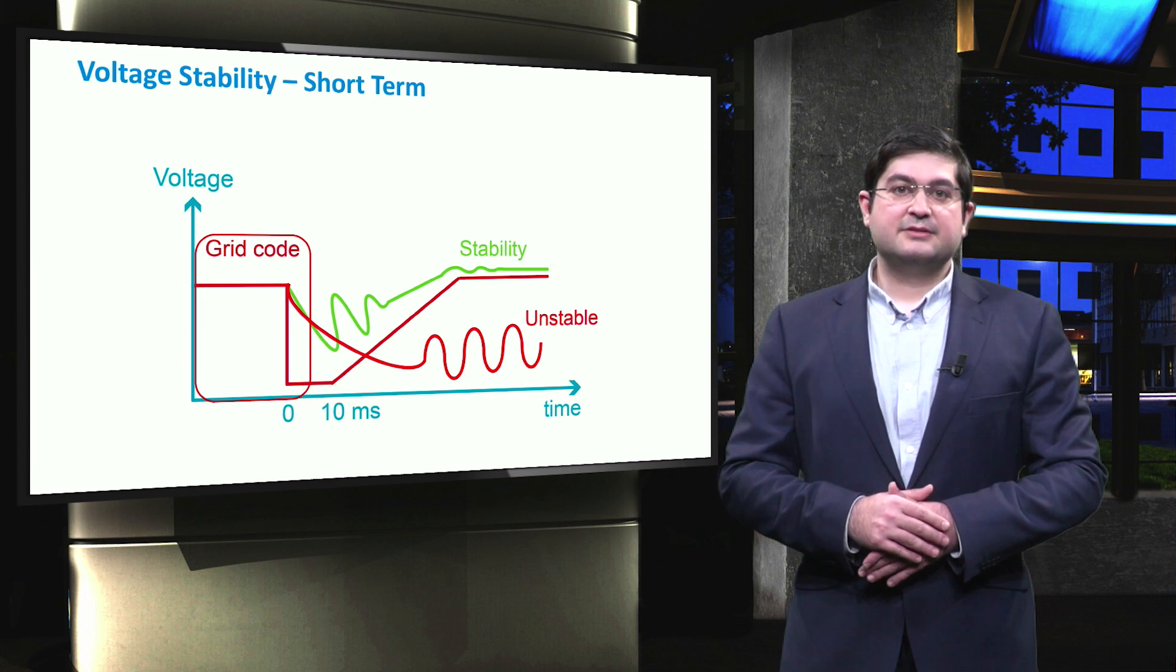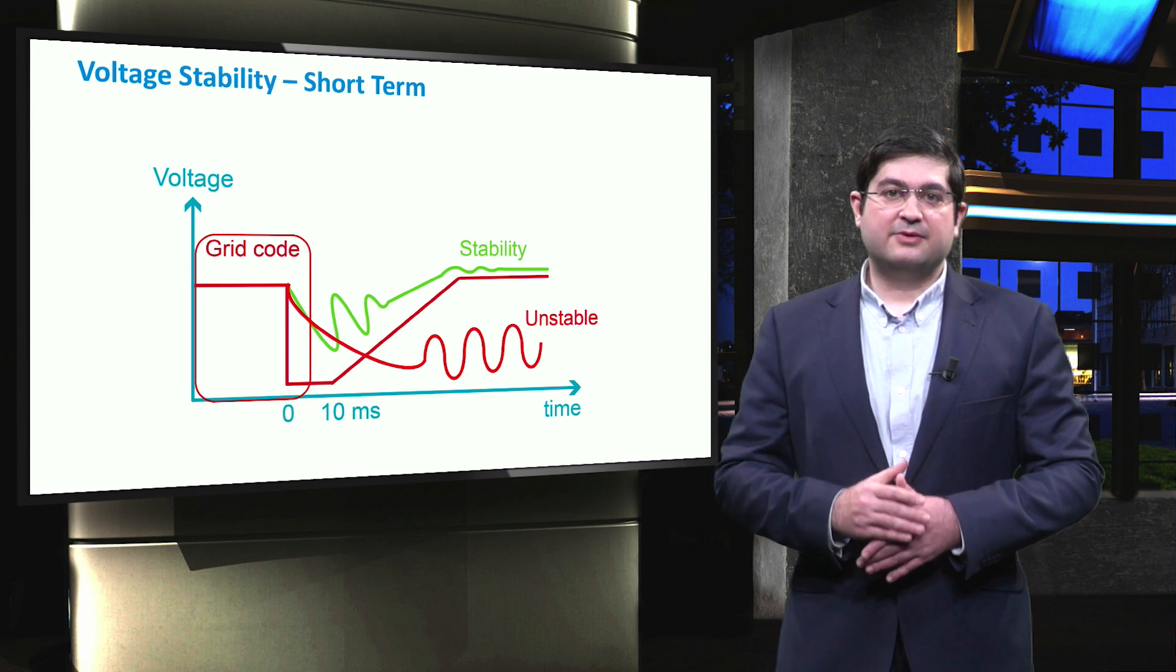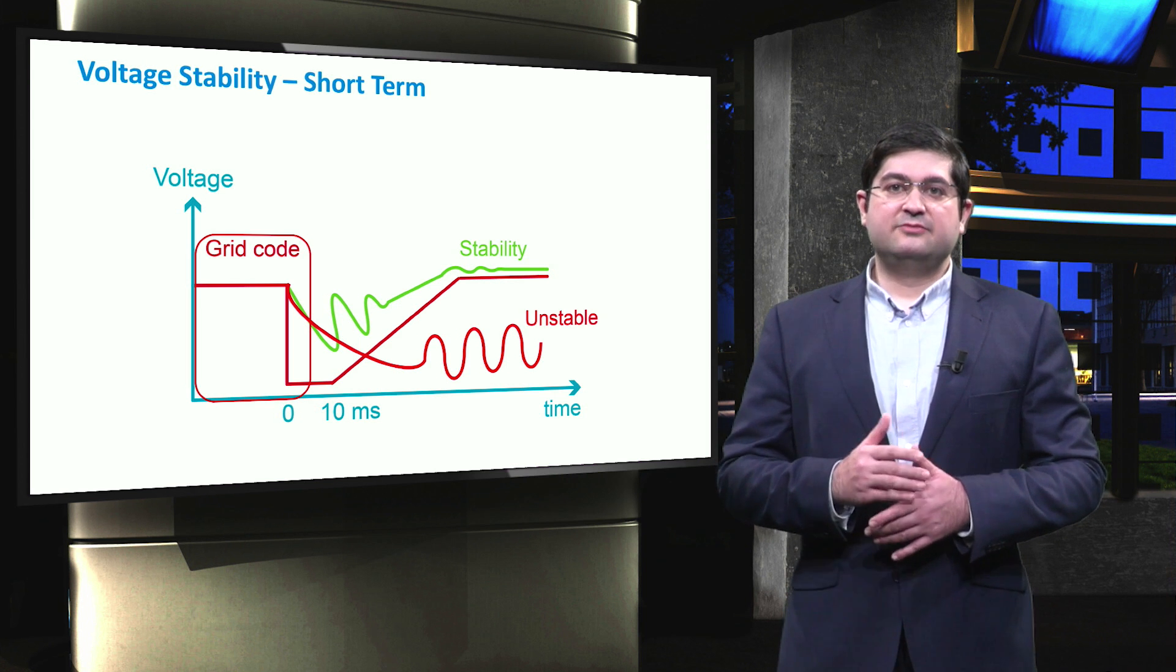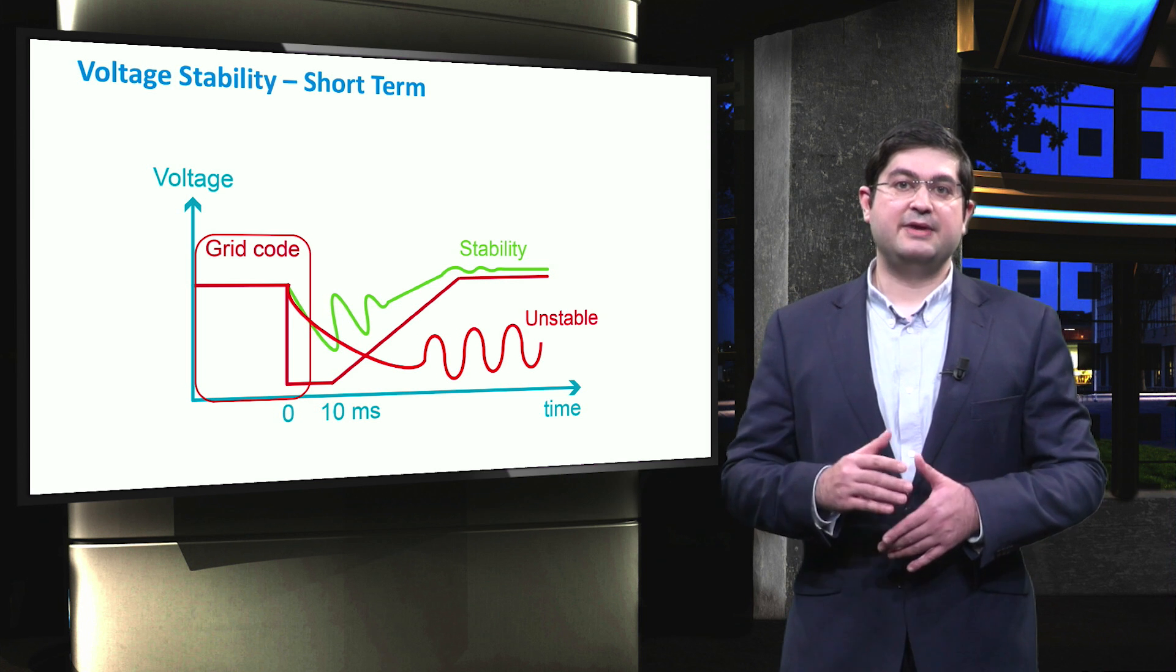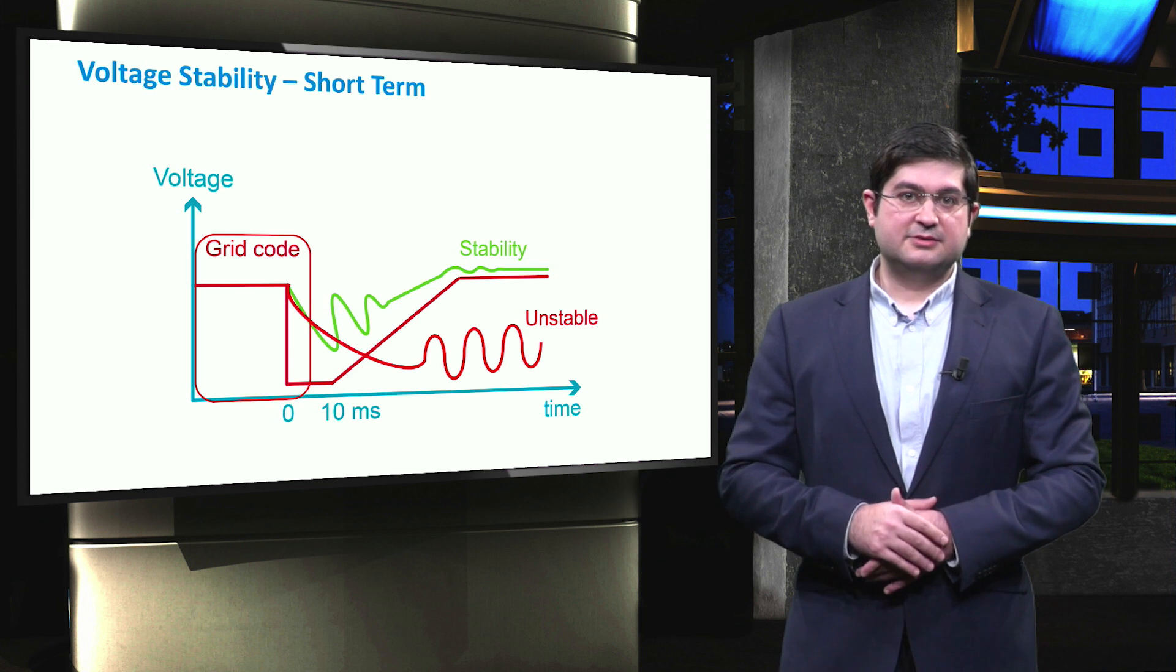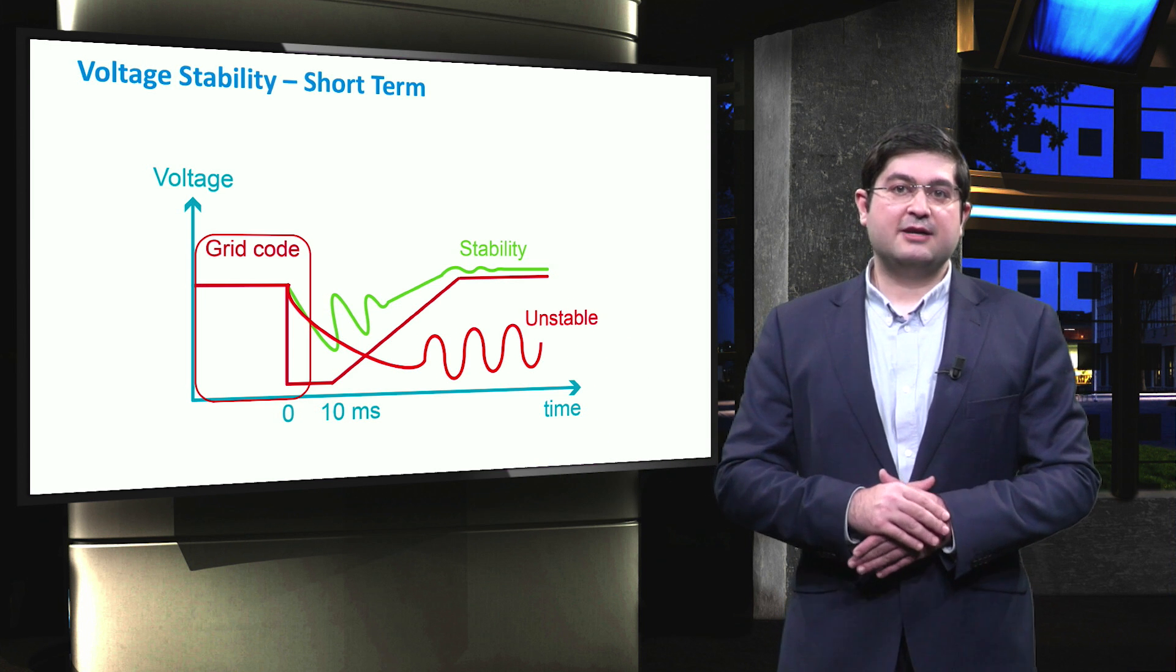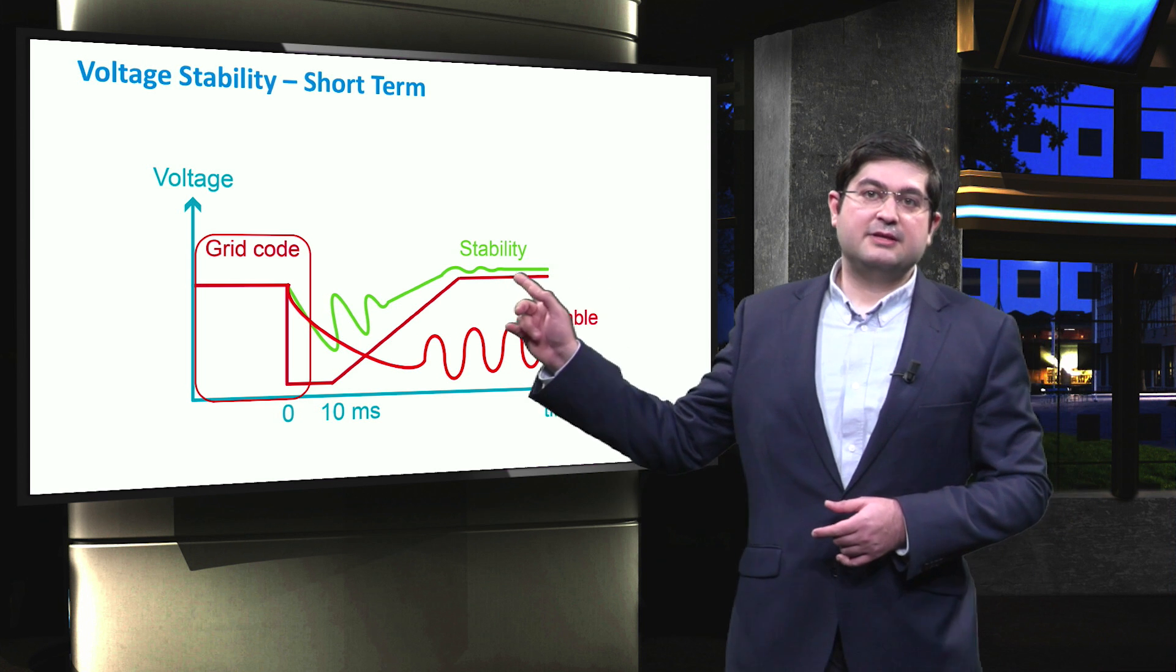If the microgrid is connected to the grid, then transient voltage stability is a relevant problem, particularly during upstream network faults. We remind that transient voltage stability refers to the capability of a system to maintain synchronous operation when they are subject to faults. As it is shown in the figure, there are grid codes with which microgrid shall comply during faults to reach a stable point after the fault.